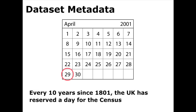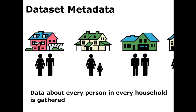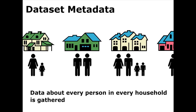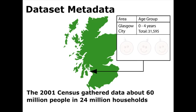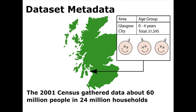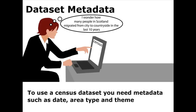Metadata about data sets, such as the UK census. Since 1801, every 10 years, the UK has reserved a day for the census. Data about every person in every household is gathered. The 2001 census gathered data about 60 million people in 24 million households. That's a lot of data. To use a census data set effectively, you need metadata such as date, area type — for example, county, region, or district — or theme.